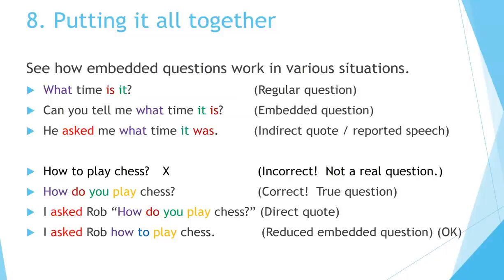Putting it all together. 'What time is it?' is a regular question. 'Can you tell me what time it is?' is an embedded question. 'He asked me what time it was' is an indirect quote or reported speech. 'How to play chess' is incorrect — not a real question. 'How do you play chess?' is correct — a true question. 'I asked Rob, how do you play chess?' is a direct quote. 'I asked Rob how to play chess' is a reduced embedded question, and that is acceptable.